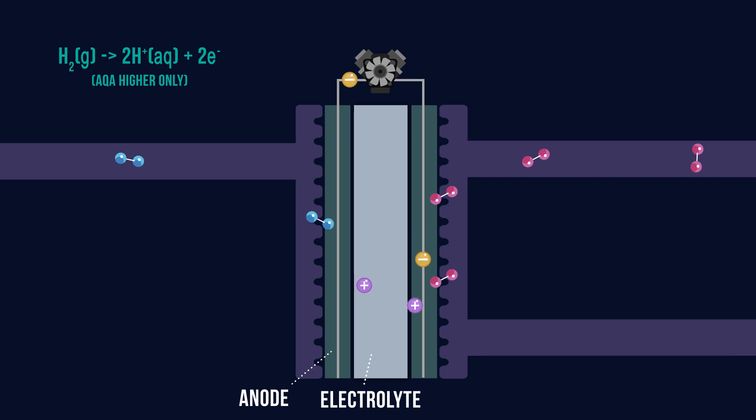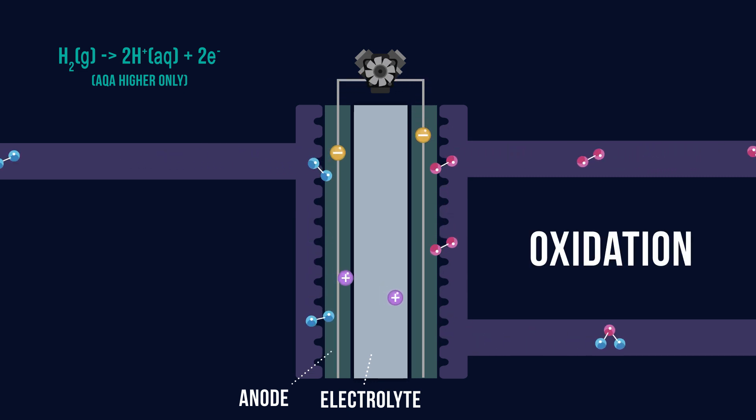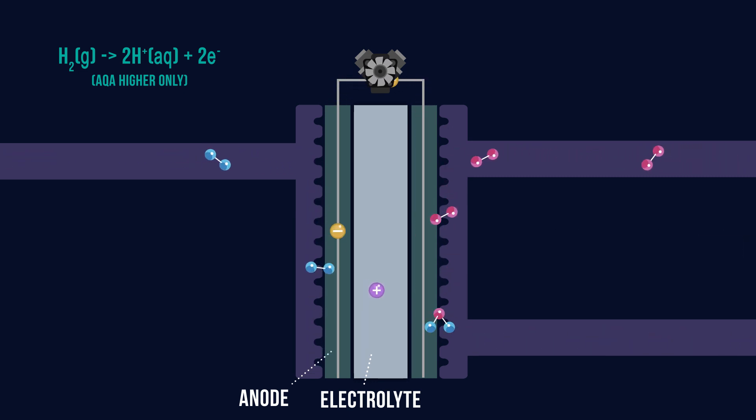The electrons flow through the anode electrode into an electric circuit to power, for example, the motor of a car, and eventually end up on the oxygen side of the fuel cell.